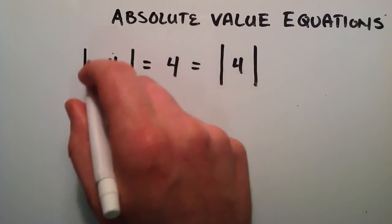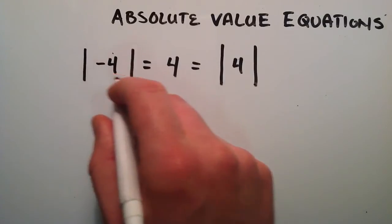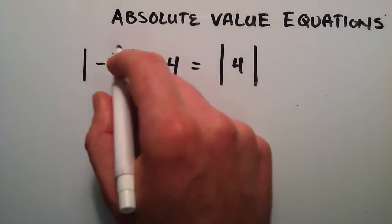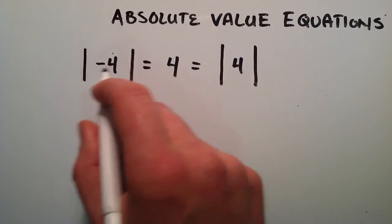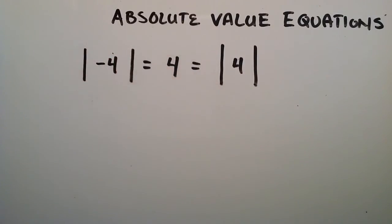Basically, we can have any kind of expression in here that we want. We can have a whole bunch of variables and whatever we need. And basically if the entire quantity of whatever is in here is negative, the absolute value bars just turn that into a positive.